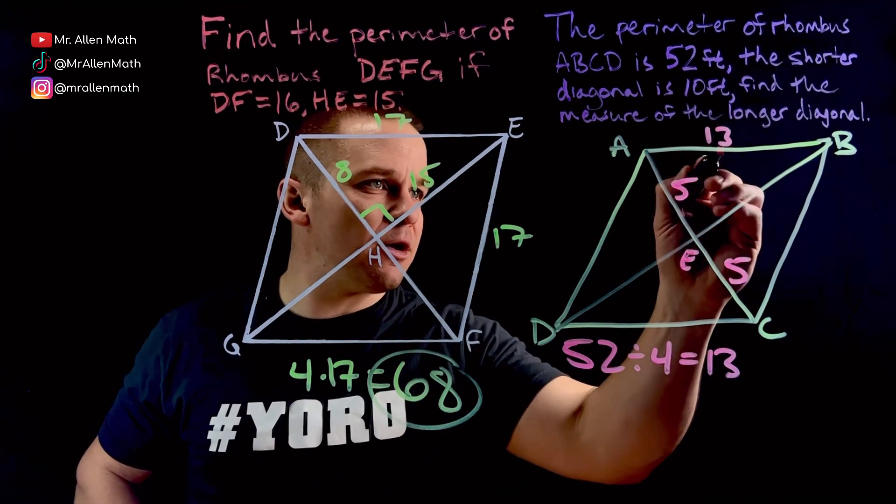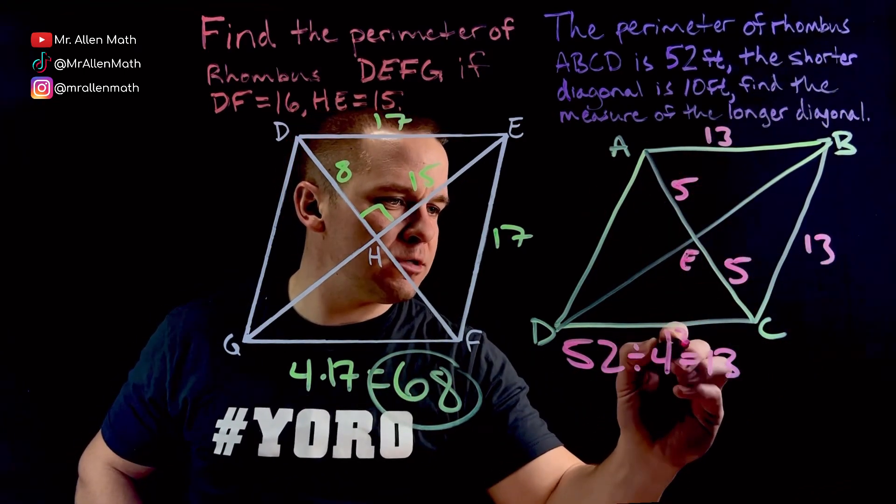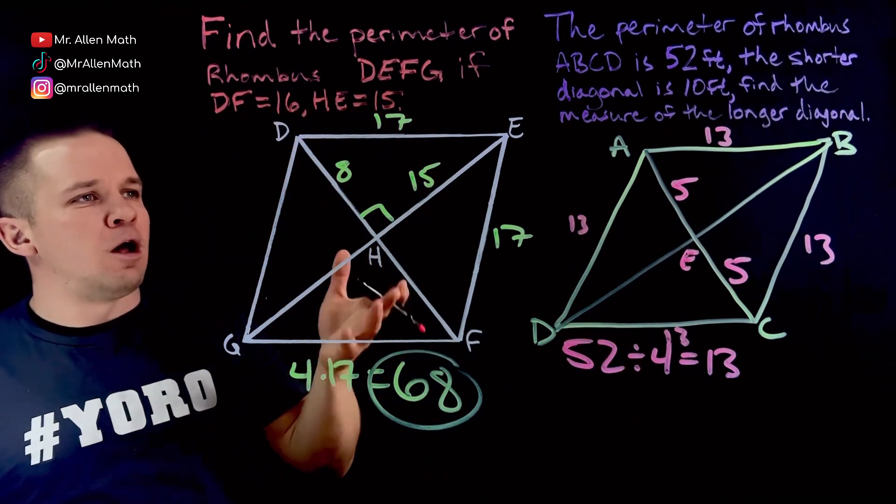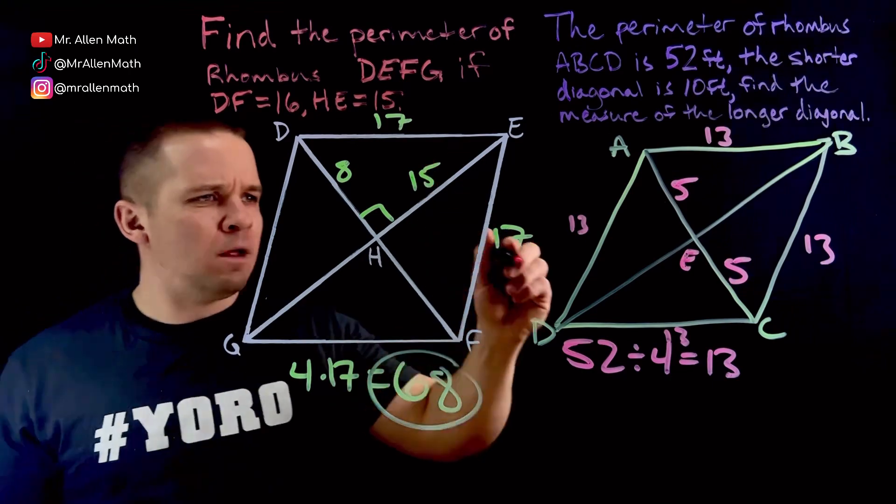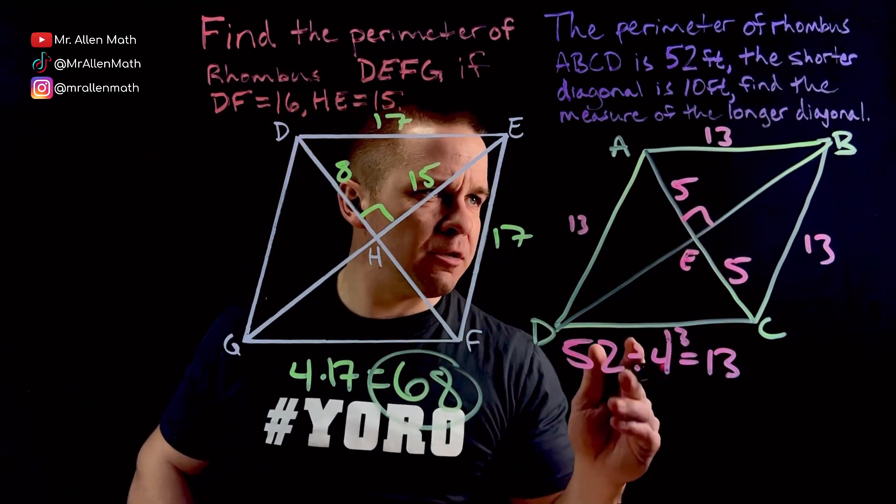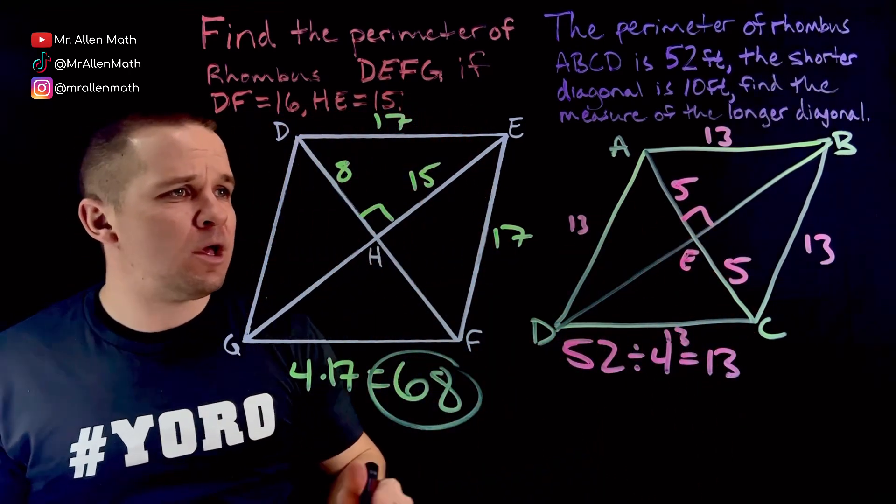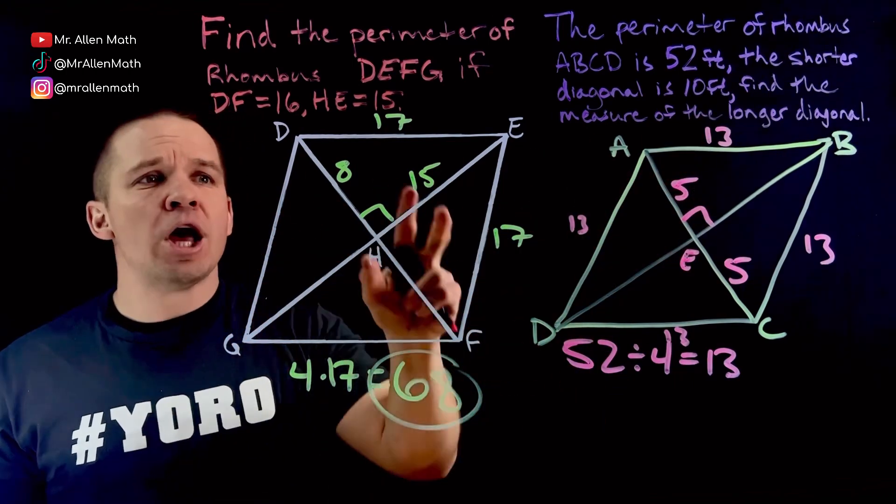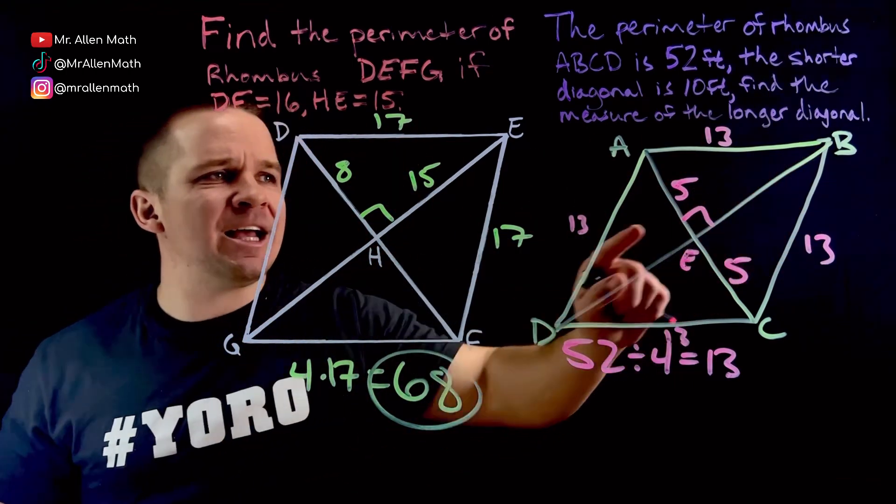So all of these guys are 13, all the 13s. It says, find the measure of the longer diagonal. Well, I know these are perpendicular to each other, right? Perpendicular bisectors of each other. This is 5. That's 13. I have a right triangle right now, just like I had before, but my leg is missing.